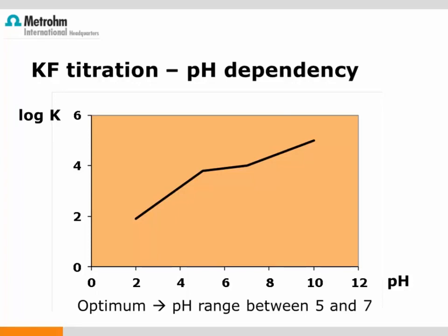Imidazole acts as a buffer substance in Karl Fischer reagents. A buffer substance is very important because the Karl Fischer reaction only proceeds rapidly and stoichiometrically in a pH range between 5 and 7. At pH values below 5, the reaction constant decreases linearly with pH — the reaction rate is low and the results will be too low. It is even possible that the reaction does not run at all if the pH is too low. If we go to higher pH values, a side reaction occurs that consumes iodine and leads to wrong results.